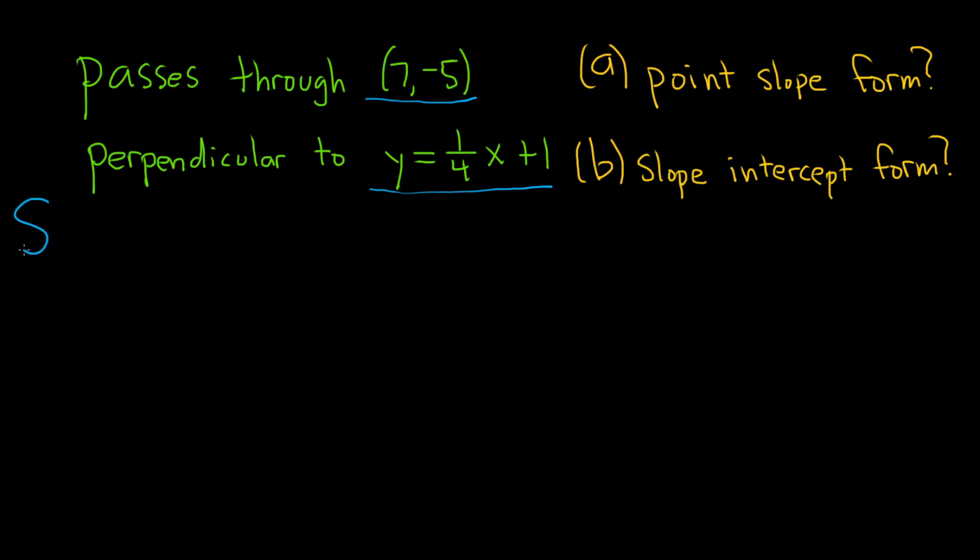Okay, let's go ahead and work through it. So to find the equation of a line in point-slope form, we need two things. We need a point, which we already have, so I'll write it again, 7, negative 5, and we need a slope.